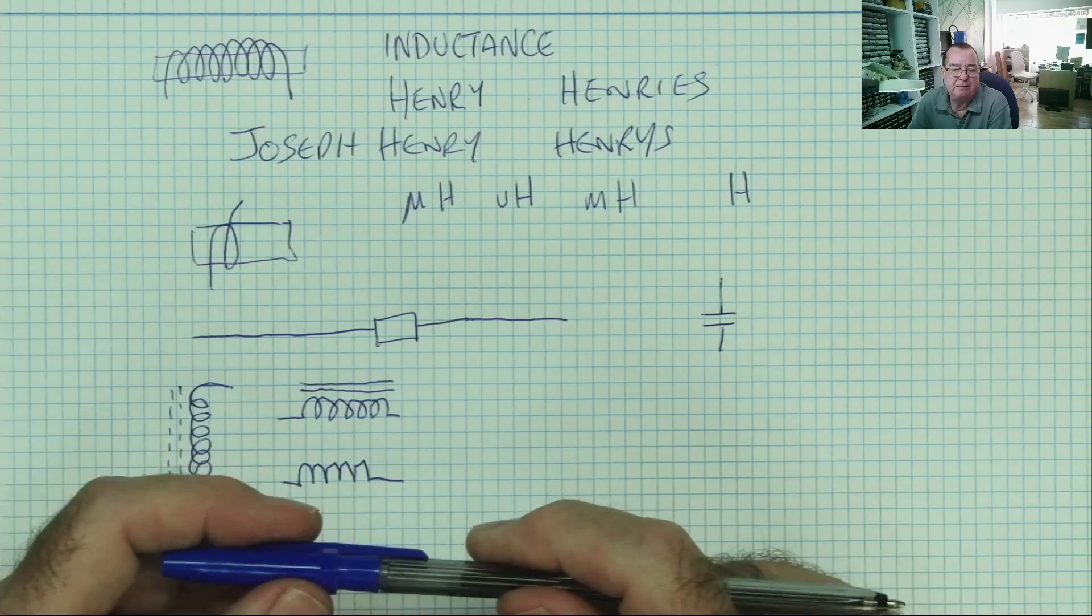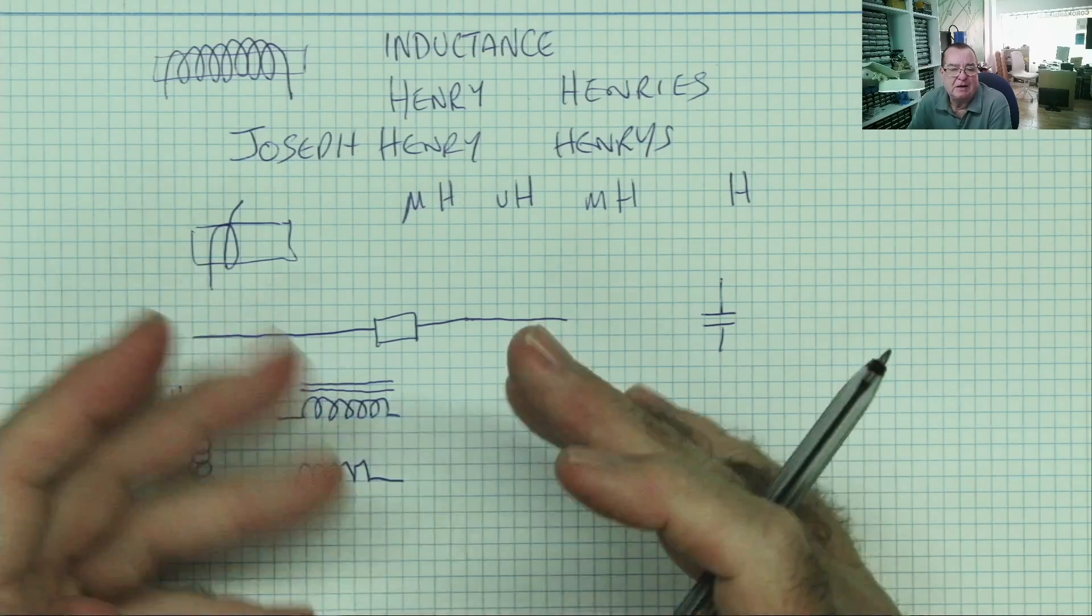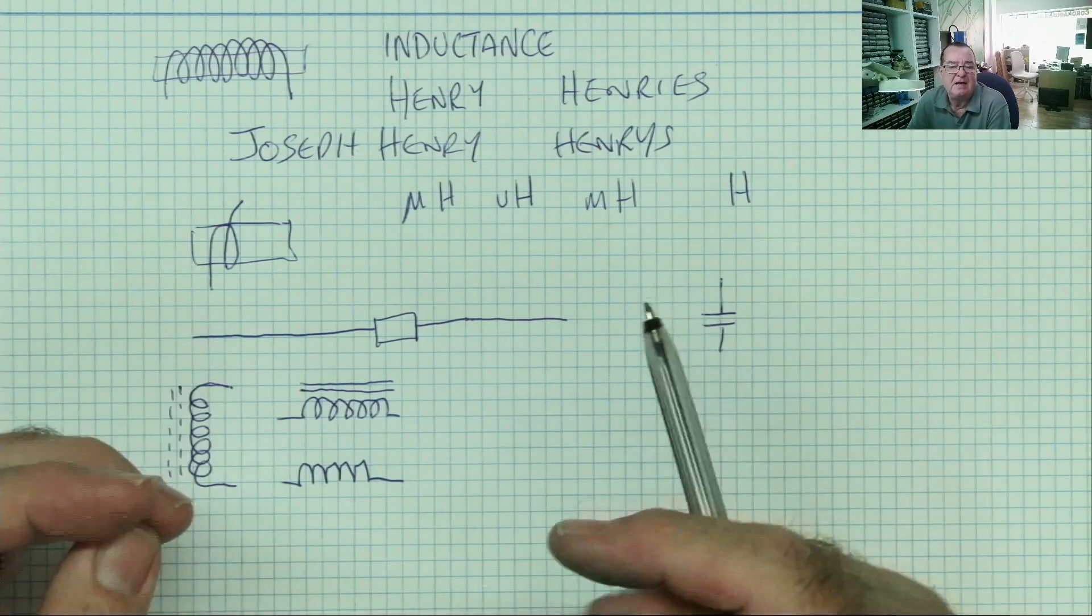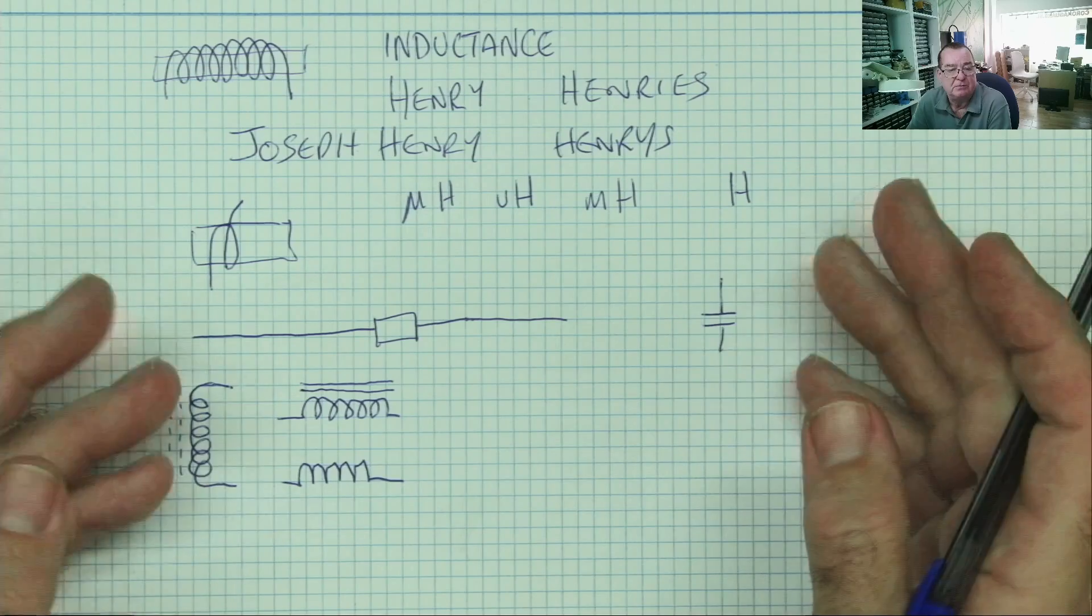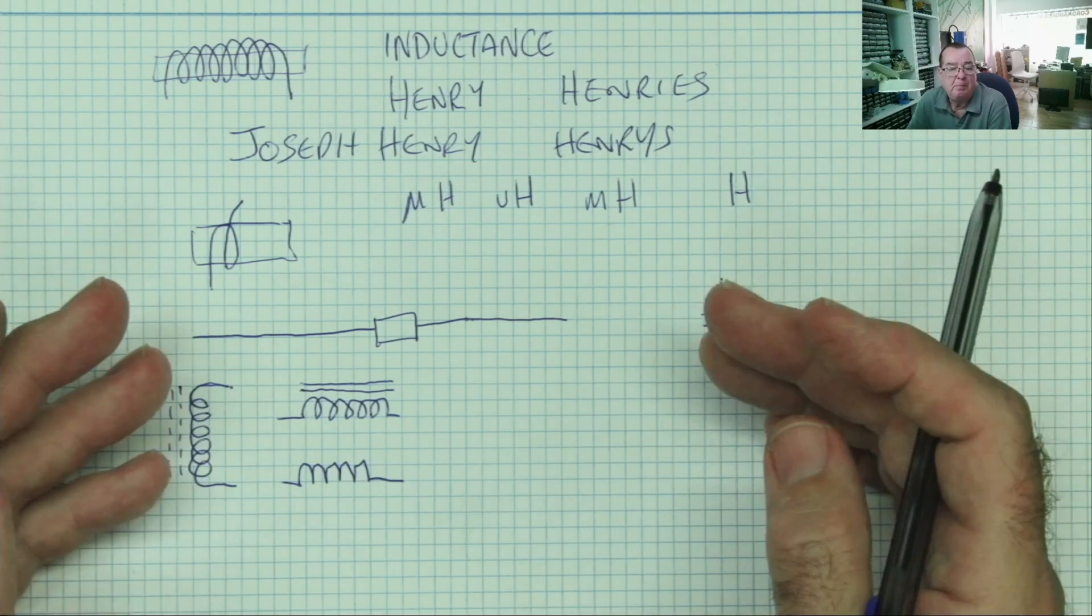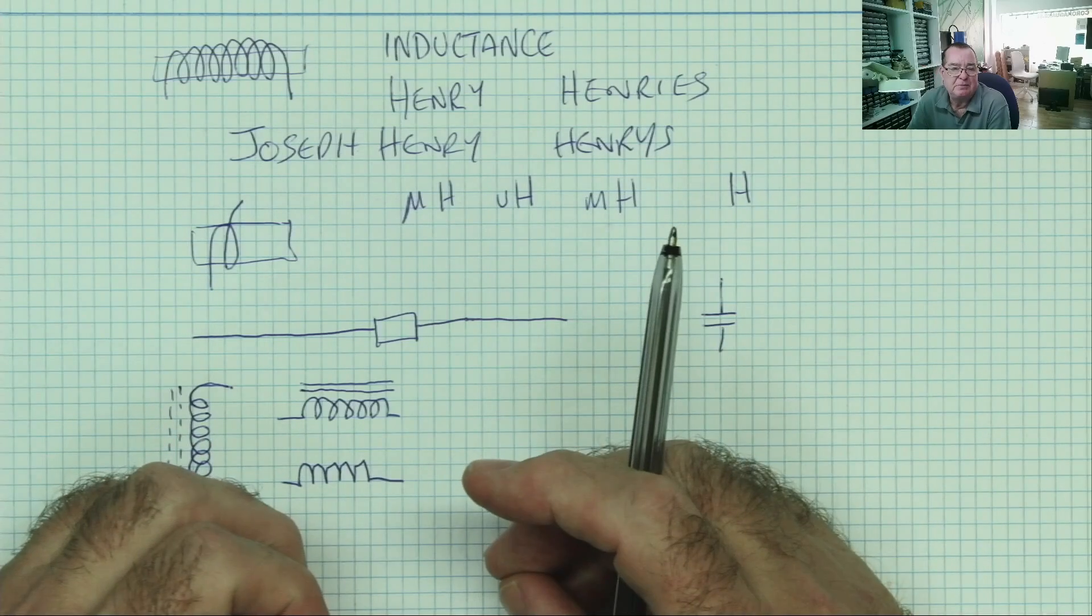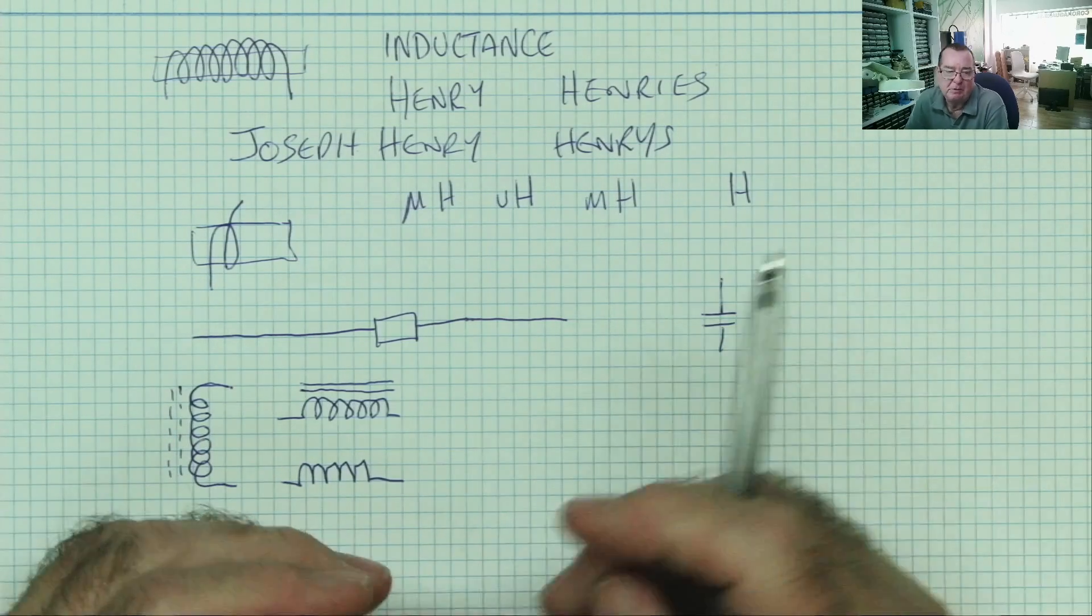So inductors are very much related to electromagnetism. When you pass a current through a piece of wire, it generates a magnetic field. When you stop passing current through the piece of wire, the magnetic field collapses again, and turns back into electricity.